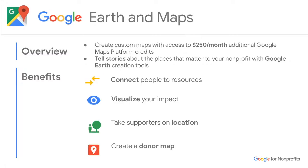Last but not least, Google Earth and Maps. With Google Maps, nonprofits get access to $250 a month of additional maps credits to customize maps for whatever you need — for example, connecting people to resources or creating a donor map to visualize your impact across different locations. With Google Earth, you can use creation tools to create stories, adding pictures or videos to show your impact and tell the story of your nonprofit if you're working across different locations.